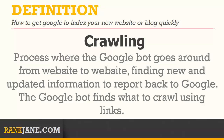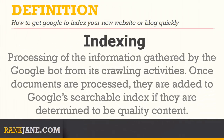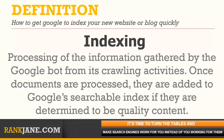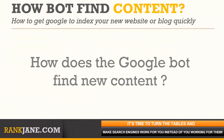Crawling is the process where the Googlebot goes around from website to website, finding new and updated information to report back to Google. The Googlebot finds what to crawl using links. Indexing is the processing of the information gathered by the Googlebot from its crawling activities. Once documents are processed, they are added to Google's searchable index if they are determined to be quality content. During indexing, the Googlebot processes the words on a page and where those words are located. Information such as title tags and alt attributes are all analyzed during indexing.